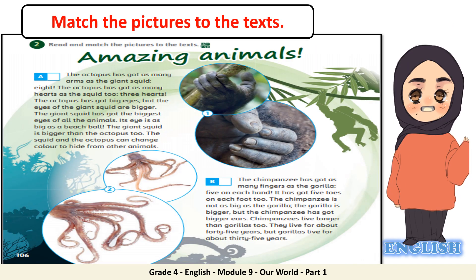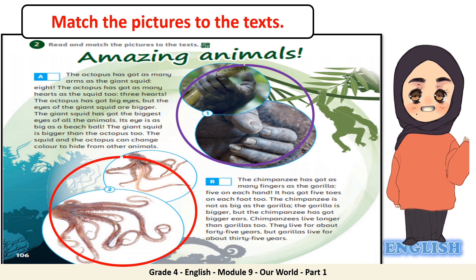Now that you have read the text, it's time to match the pictures. Have a look at the two pictures. Now it's time to read the topic sentence from each paragraph. A: the octopus has got as many arms as the giant squid. B: the chimpanzee has got as many fingers as the gorilla. Picture number one goes with text B, and picture number two goes with text A. Great job everyone!